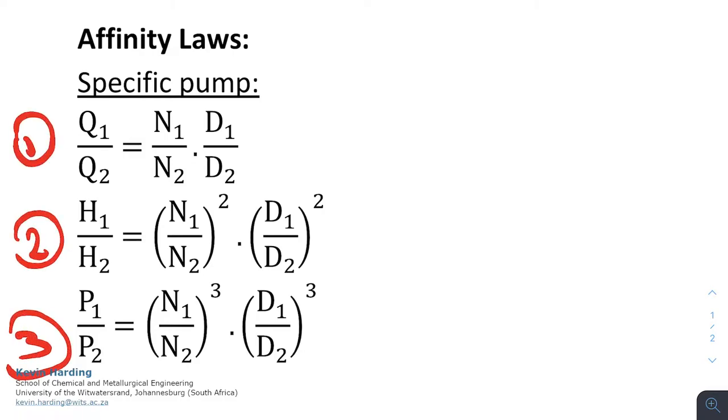These relate Q for pump 1 divided by Q of pump 2 as equal to the speed of pump 1 divided by the speed of pump 2 multiplied by the diameter of pump 1 over pump 2. In a similar way, we can get the head relationship between pump 1 and pump 2 as well as the power relationship. This is for a specific pump if we change something about that specific pump.